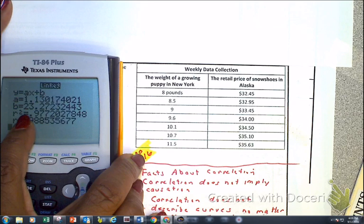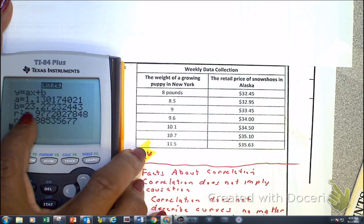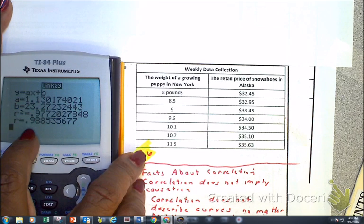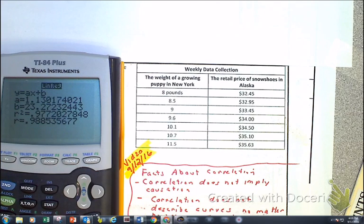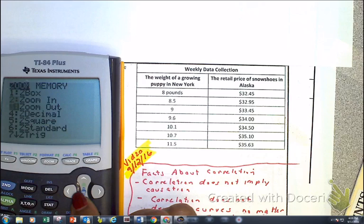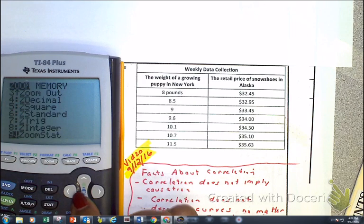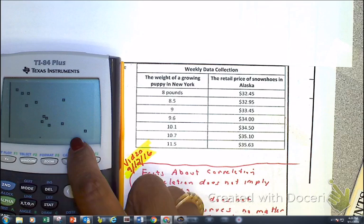Now here I've got my equation of a line. I've got my coefficient of determination, we'll talk about sooner or later, and now I have my correlation. So let's jot that down. Now I need to jot down my graph, so remember I go to zoom, down to stat, and here is my graph.